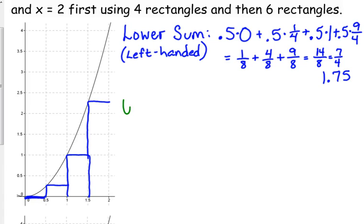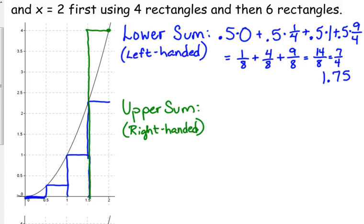That just gives us a little bit more meaning as far as area. You can visualize 1.75 a lot easier than you can 7 over 4. So then let's do the upper sum. The upper sum, in this case, is going to be the right-handed rectangles. And remember, that means we start on the right side of our interval. So we start at x equals 2, go to its y value on the curve, and draw our rectangle. And then we go to 1.5, draw that rectangle, 1, draw that rectangle, 0.5, draw that rectangle.